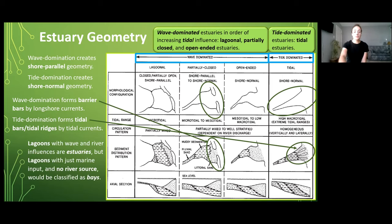Lastly for geometry we have lagoons. Lagoons typically form when there is some sort of barrier bar causing the accumulation of water behind it. In lagoons they can either be fed by marine and fluvial sources or just marine. When lagoons are fed by both fluvial and marine sources we call these lagoons. However, when lagoons are fed by marine sources only with no river source these are technically classified as bays.